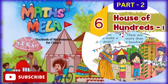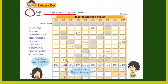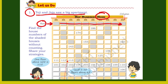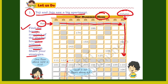So let us begin. First: Teji and Jojo saw a big apartment. Teji और Jojo को यहां पर एक बहुत बड़ा apartment दिख रहा है, जिसका नाम है Hop 100's Home. जो भी इस तरीके की लाइन होती है इसको हम row बोलते हैं, और जो यह लंबी लाइने होती हैं इसको हम column बोलते हैं. Find the house numbers of the shaded houses without counting.